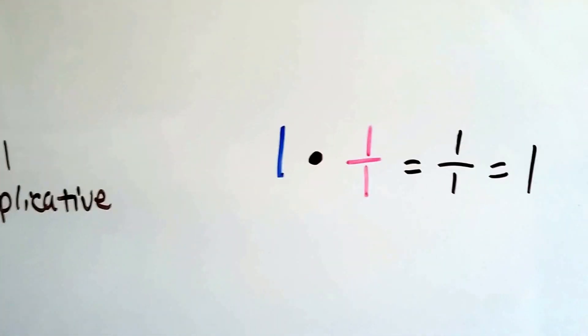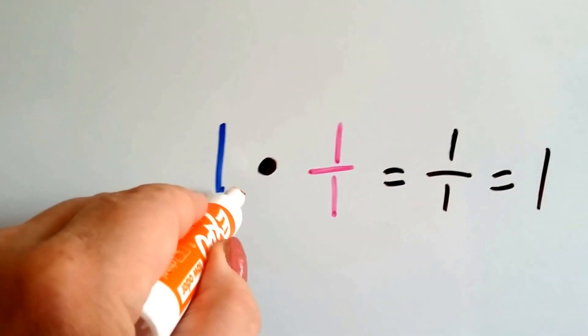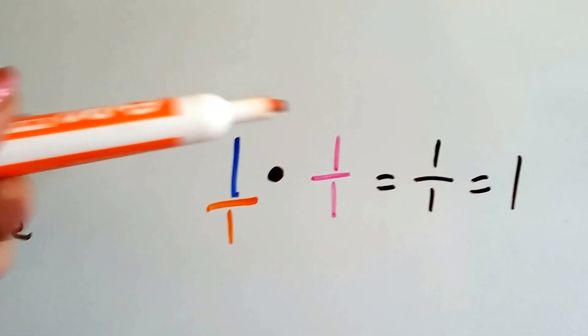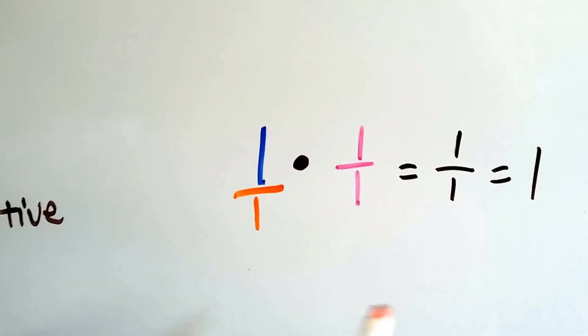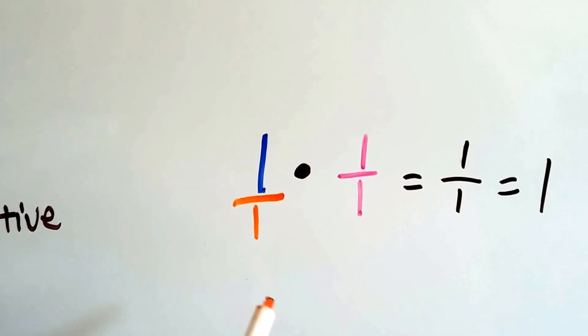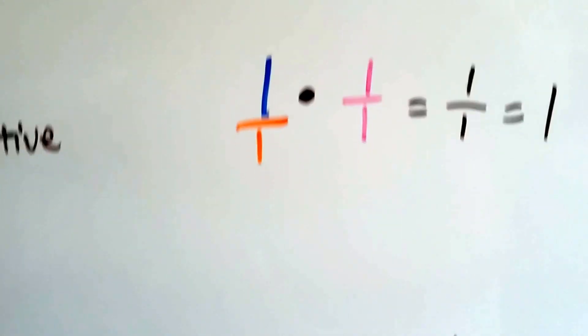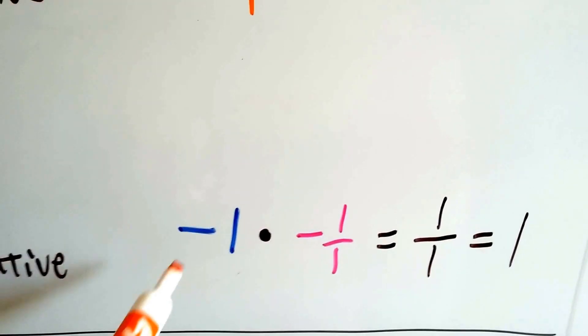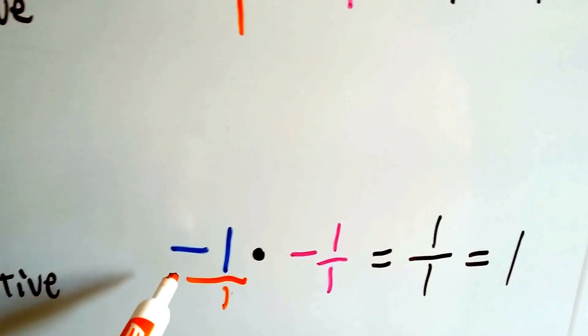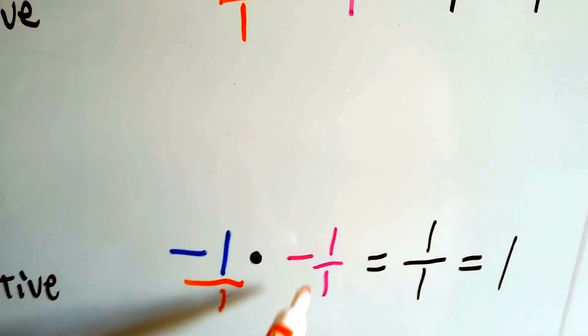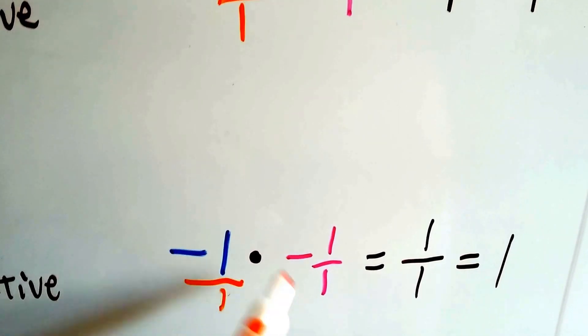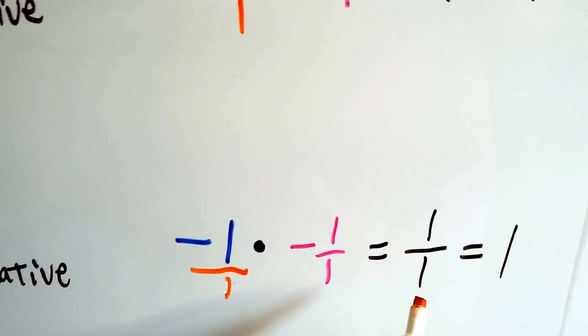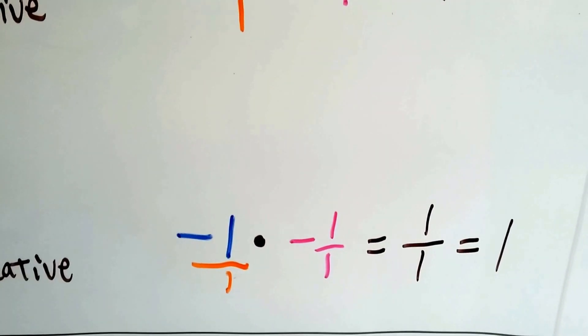But what if we had a 1? We can write 1 as 1 over 1. And then we multiply straight across. 1 times 1 is 1. 1 times 1 is 1. We got 1 over 1. That's a 1. So the reciprocal of 1 is 1. What about negative 1? Well, remember the negative sign. So even if we wrote it over the 1, the reciprocal of negative 1 is negative 1. When we multiply them, the negative and the negative makes a positive, so we get 1 over 1, and that's 1.